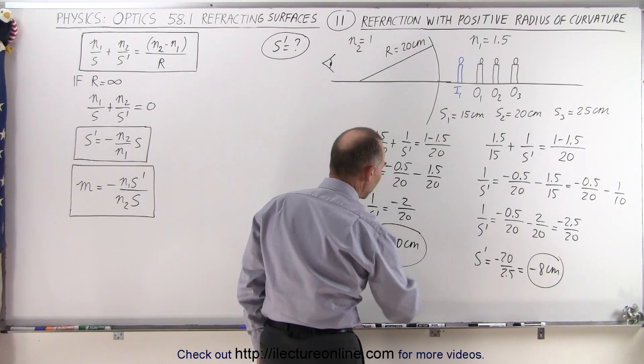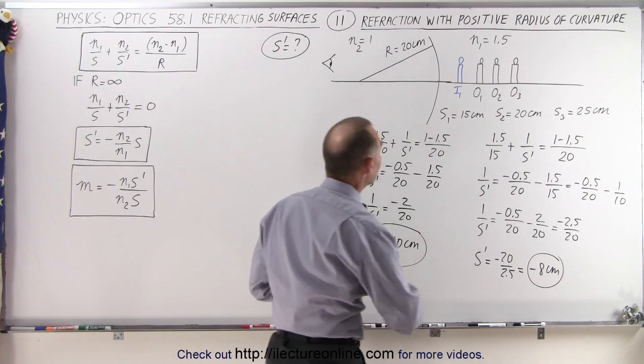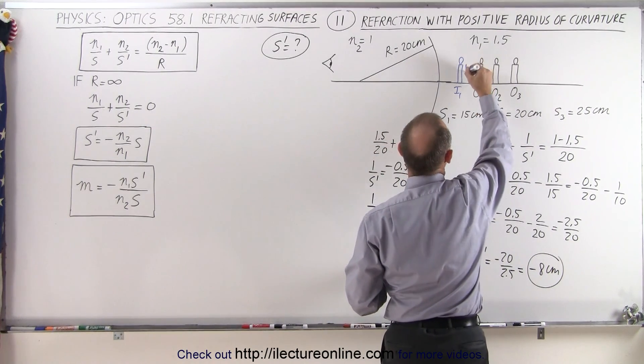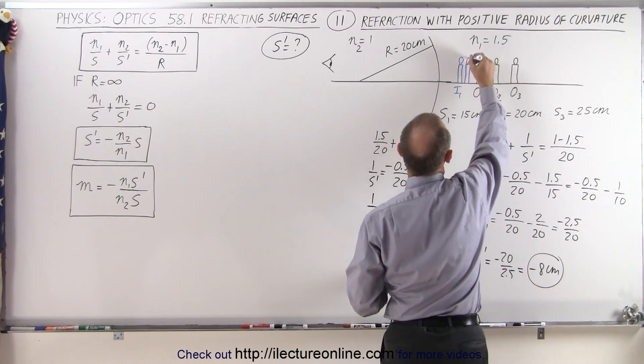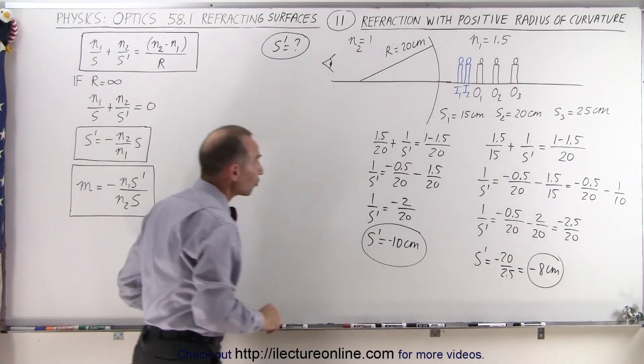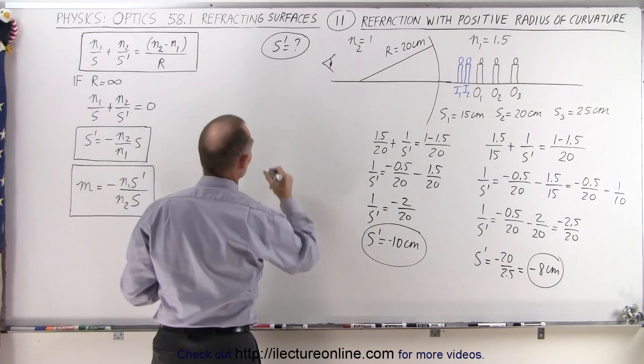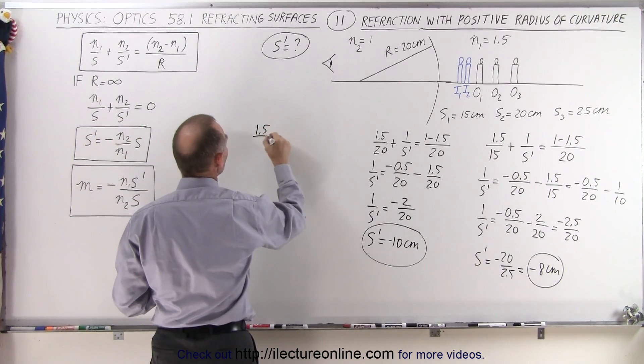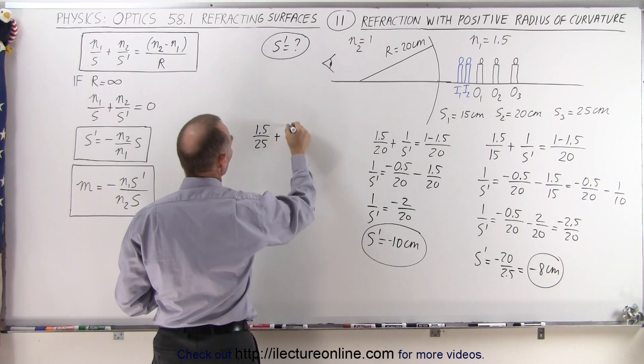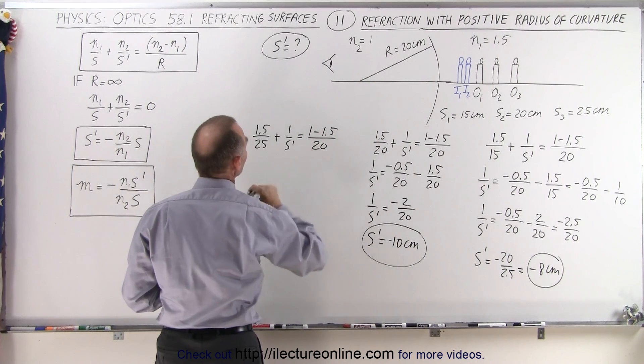Again, minus means it's on the same side as the object. In this case, it is 10 centimeters from the boundary. So here is our image 2. And now let's try object distance of 25 centimeters and see what we get. So 1.5 divided by 25, plus 1 over S' is equal to 1 minus 1.5 over positive 20.